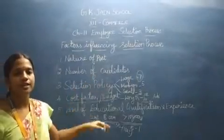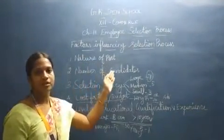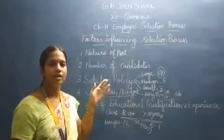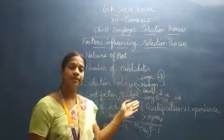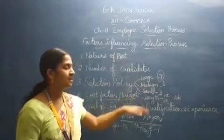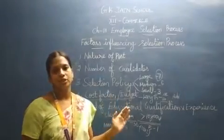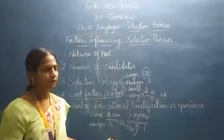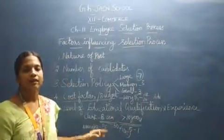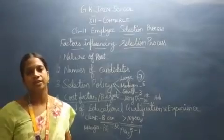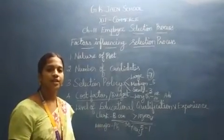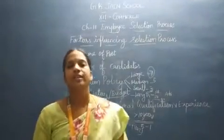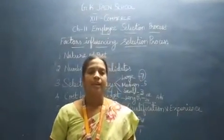So these are the five factors influencing the selection process: first, nature of the post; second, number of candidates; third, selection policy, which differs by size of organization — large, medium, small; fourth, cost factor — with more steps spending more and fewer steps spending less; and fifth, level of educational qualification and experience — higher level means fewer candidates and an easier process, lower level means more candidates and a more difficult one. I will end the session. Thanks for watching.